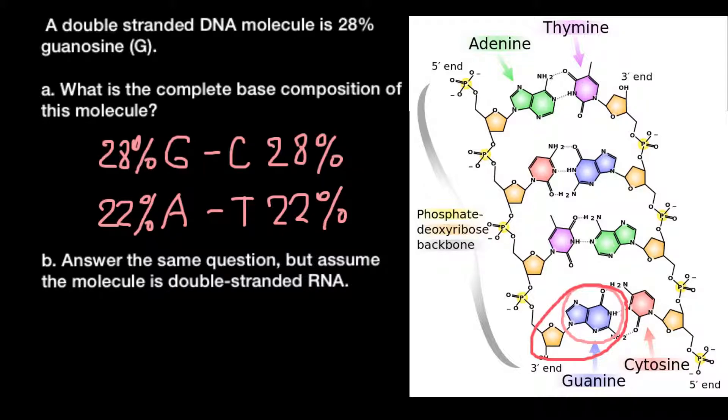In RNA, guanine base pairs with cytosine and adenine base pairs with uracil. So in RNA, thymine would be substituted with uracil and the numbers would be the same.